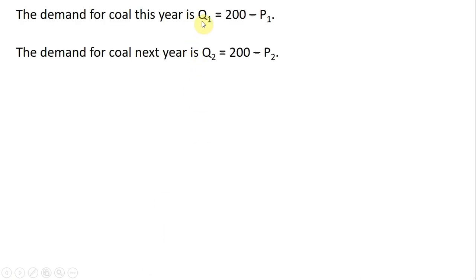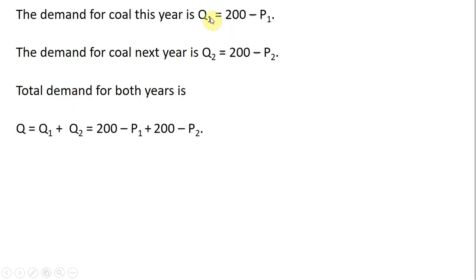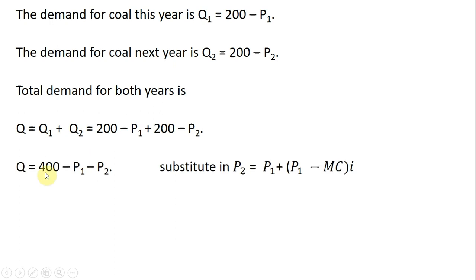The demand for coal this year is given by one equation, and the demand for coal in year 2 is given by another. Total demand is just Q subscript 1 plus Q subscript 2. Adding up the constant terms — the 200s — we get an equation for total demand. A key result from the last slide where we solved for P subscript 2 will now be substituted into our total demand equation.